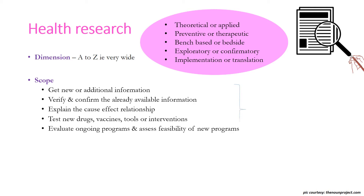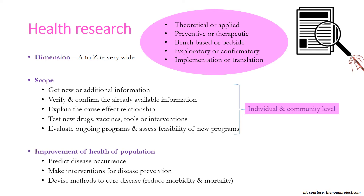All these things can be done at both the individual and community level. The ultimate aim of health research is improvement of the population's health by predicting disease occurrence, making interventions for disease prevention, and devising methods to cure disease — that is, to reduce morbidity and mortality.